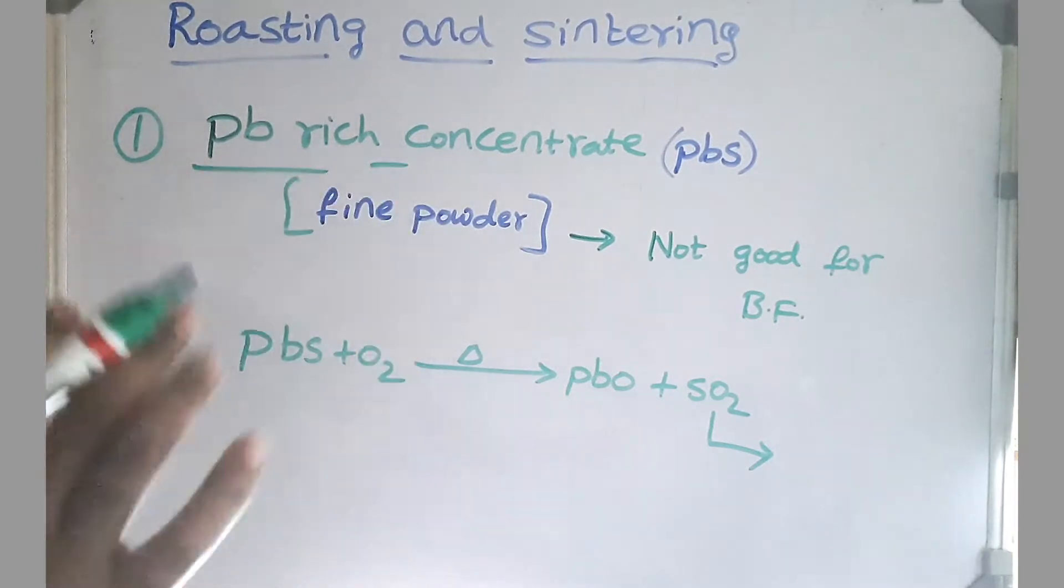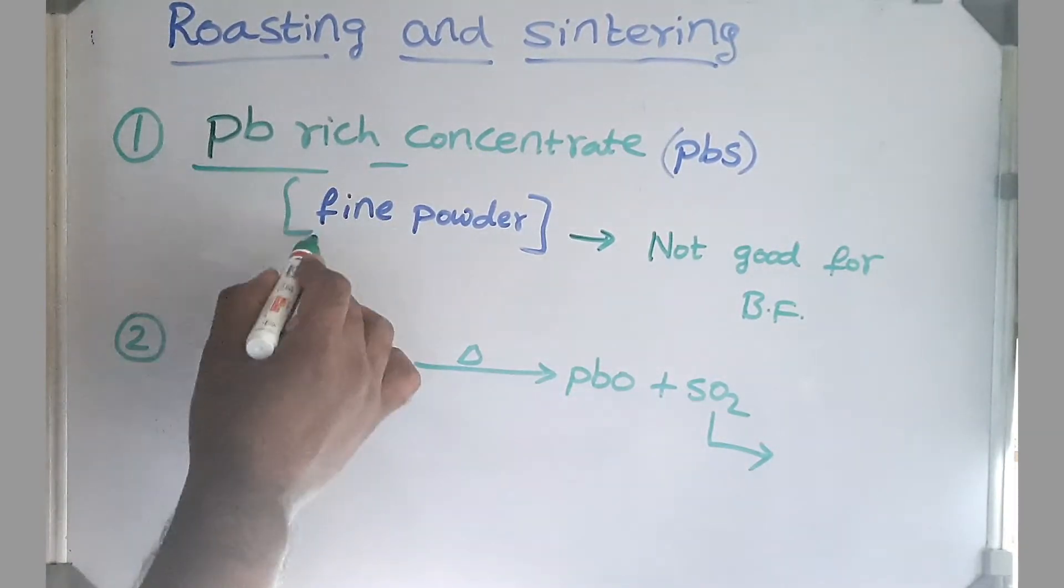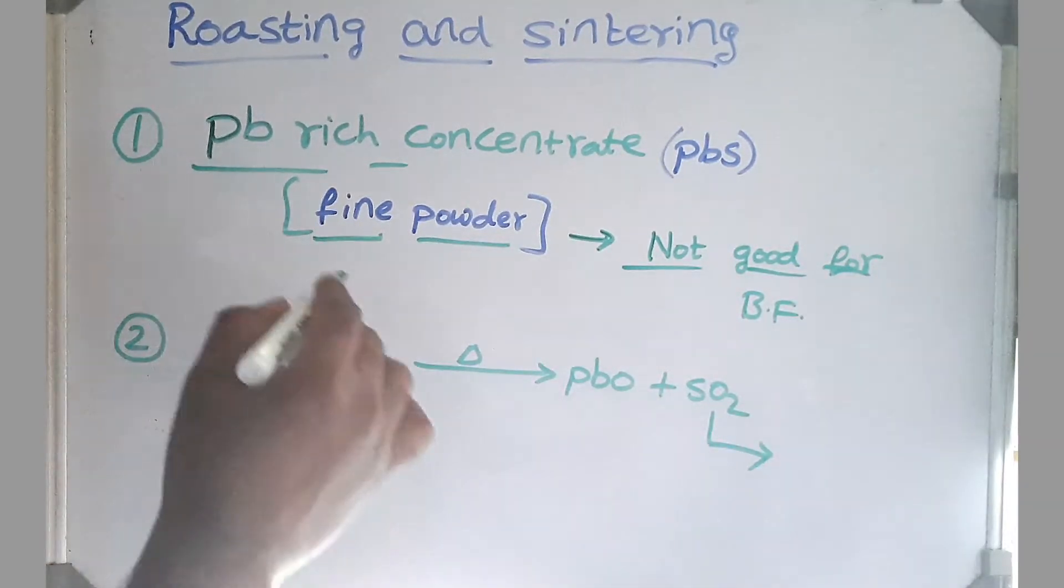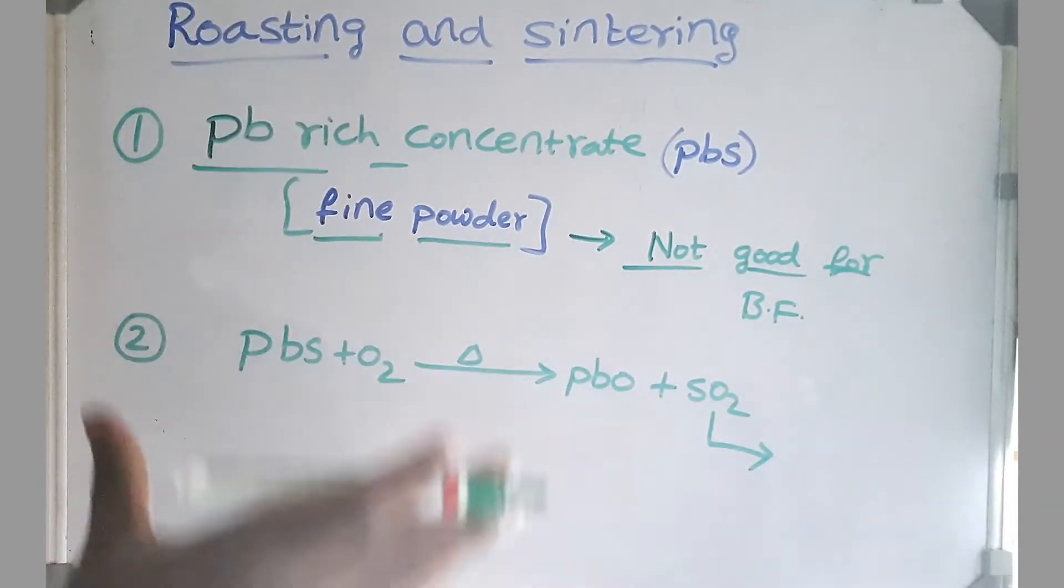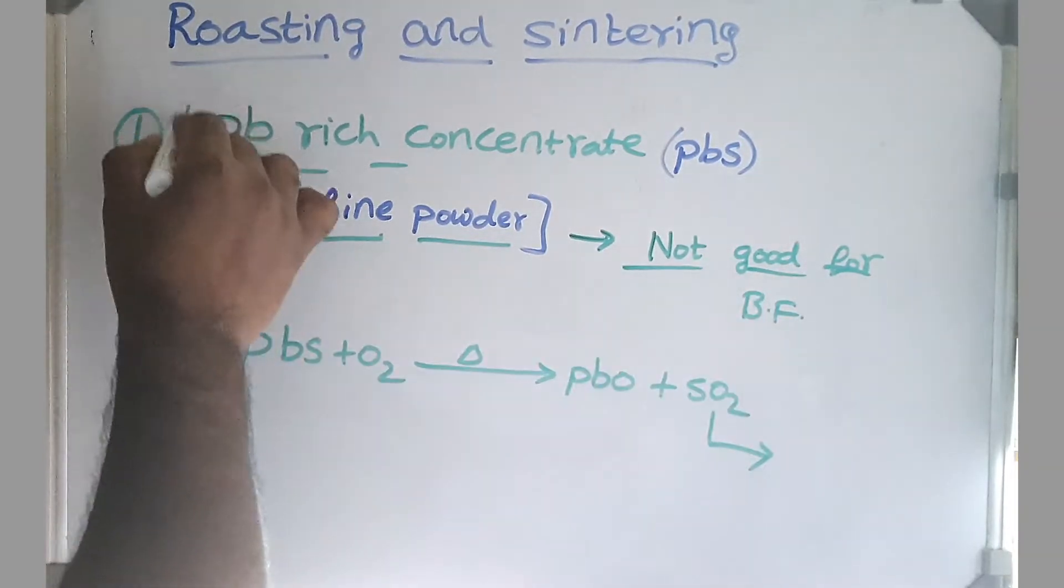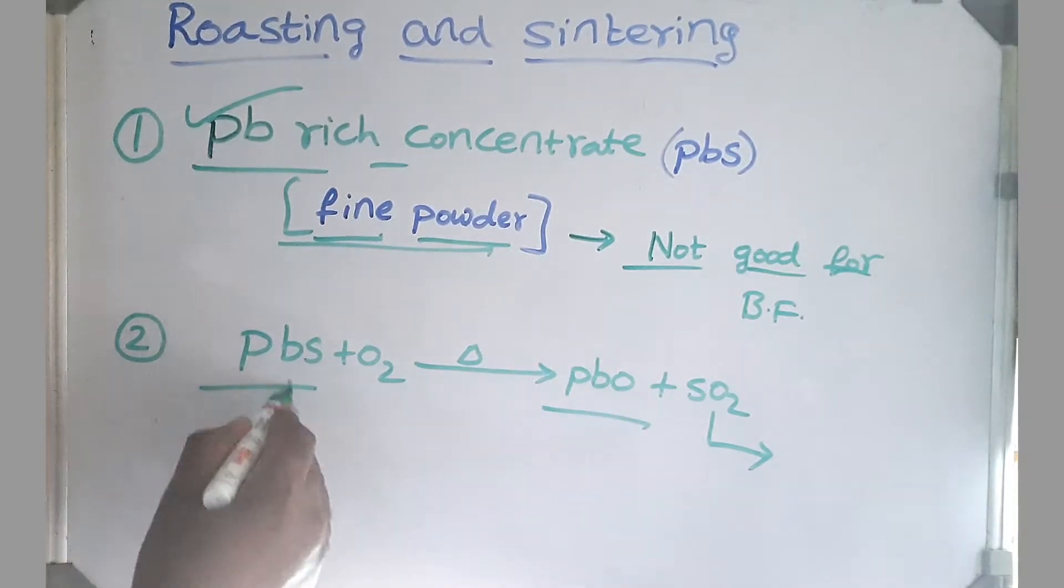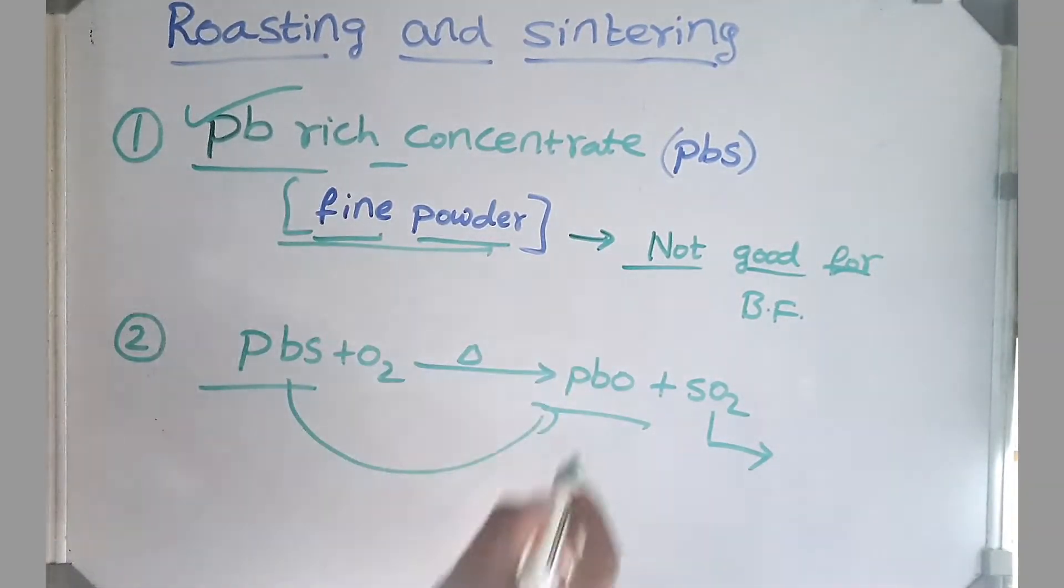The lead rich concentrate that we got from differential flotation is in the form of fine powder, which is not good for blast furnace. Why? Because if it is a fine powder, it causes a huge problem by forming channeling in blast furnace. So we cannot use fine powder as a raw material for our blast furnace. One more thing: we convert our sulfides to oxides. Why? Through roasting. Why do we convert? Because oxides are more reducible than sulfides.